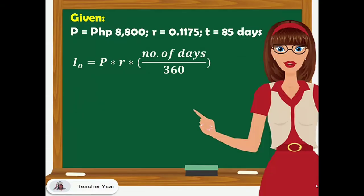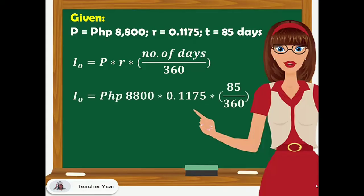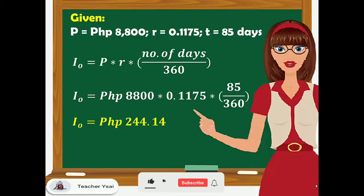To solve for the ordinary interest, we have the formula P times R times number of days over 360. Substituting the given, we have P which is 8,800 times R which is 0.1175 times number of days which is 85 over 360. Simplifying this equation, we have our ordinary interest equal to 244 pesos and 14 centavos.